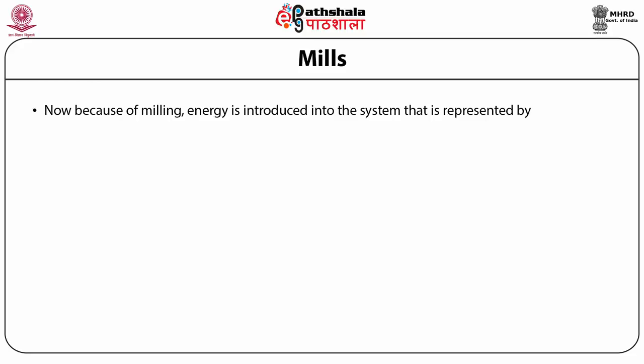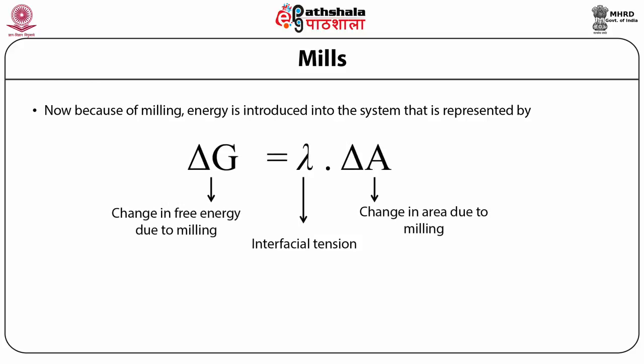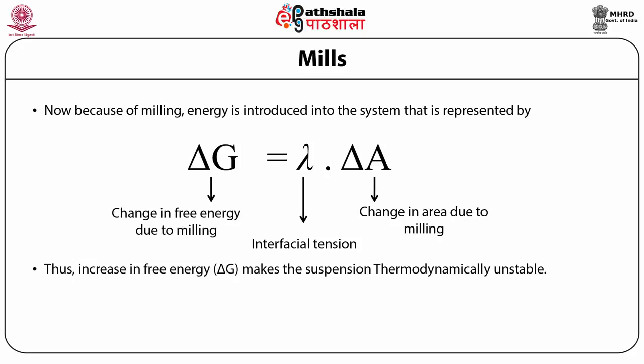Because of milling, energy is introduced into the system, which is represented by the equation ΔG = λ × ΔA. In this equation, ΔG represents change in free energy due to milling, λ represents interfacial tension, and ΔA represents change in area due to milling. Thus, increase in free energy ΔG makes the suspension thermodynamically unstable.